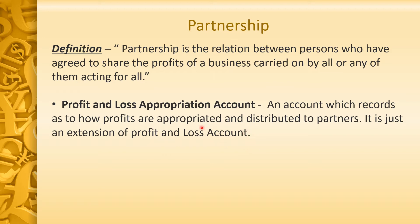In the Profit and Loss Account, whatever profit is there, that profit will be distributed among partners, and the distribution will be according to ratio. For example, Ram and Shyam are partners, and the profit sharing ratio is 3:2, so whatever profit there is, it will be distributed in the ratio 3:2.